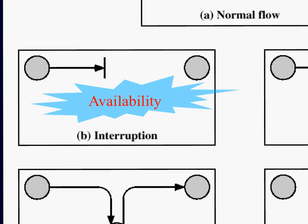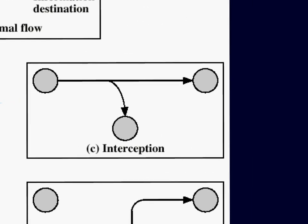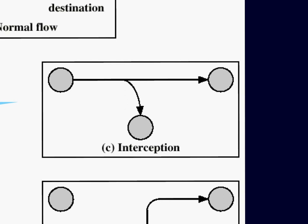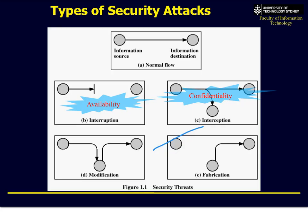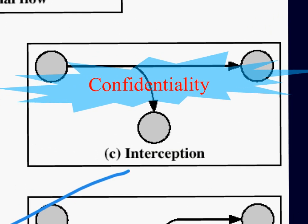Another type of attack is interception. If I'm entering my credit card and sending it to a website, and somebody makes a copy — and I suddenly find my credit card is out of money — that's a confidentiality attack. Somebody has sniffed my web connection and grabbed my credit card.